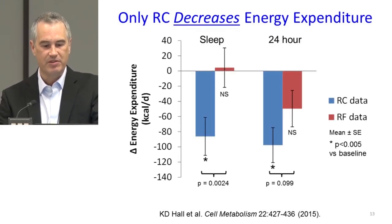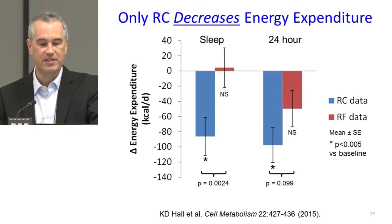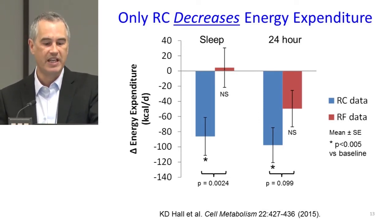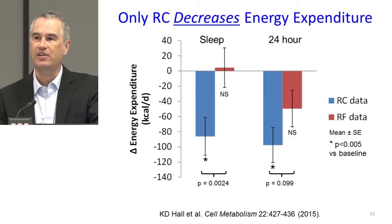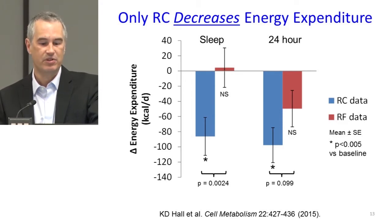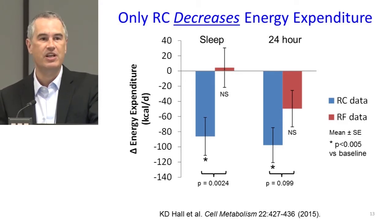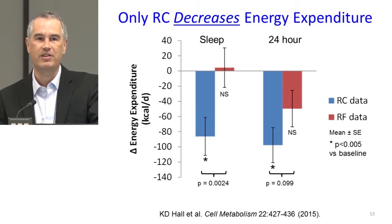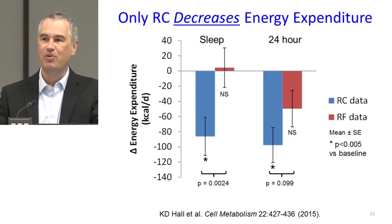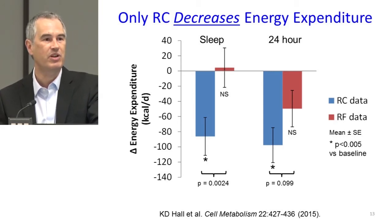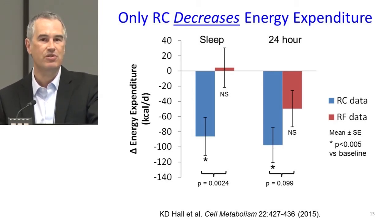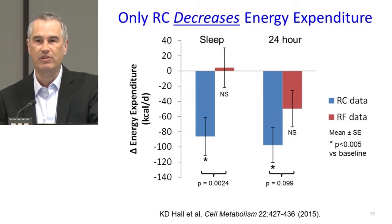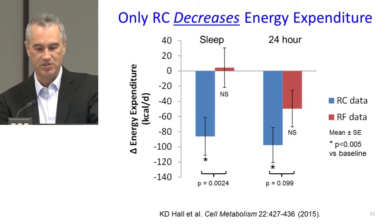How did that happen? Only the reduced-carbohydrate diet led to a reduction in energy expenditure, whereas the reduced-fat diet led to no significant changes in energy expenditure, both in sleep and over the 24-hour period. The calorie has to be accounted for somewhere. Because we were controlling energy intake, the small differences in body fat loss between conditions were accounted for by the changes in energy expenditure that we observed.